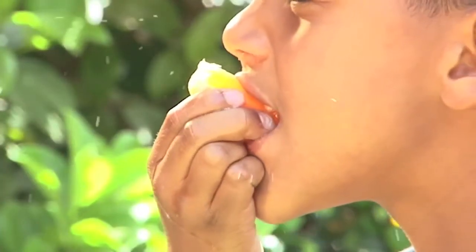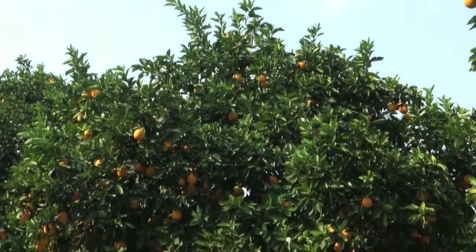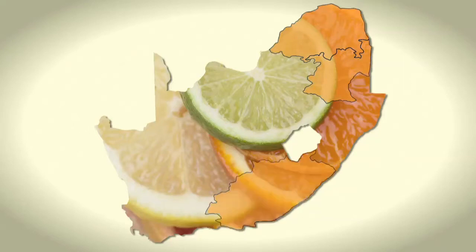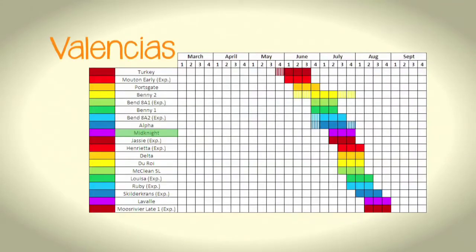This makes Valencia oranges ideal for juicing and for eating fresh. Valencias are suited to hot, humid areas. Two-thirds of the Valencias are produced in the Limpopo Province and Mpumalanga, with the only other significant production being in the Eastern Cape, where we find 16% of the total planted hectares. Midnight, technically a mid-season orange, Delta Valencia and Turkey Valencia are the cultivars produced most, accounting for about 85% of the hectares used for Valencia production. Turkey Valencia is the first cultivar to mature, ready for harvesting from about the last week in May in the warmer production areas. The last Valencia cultivars mature around September.